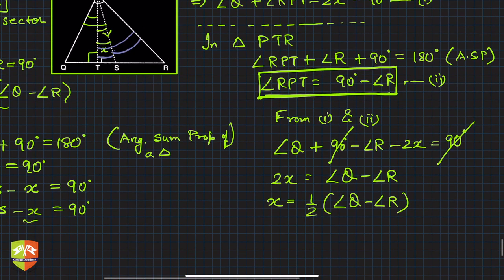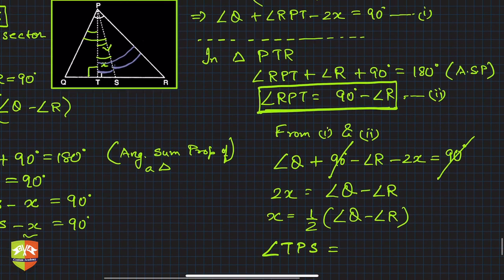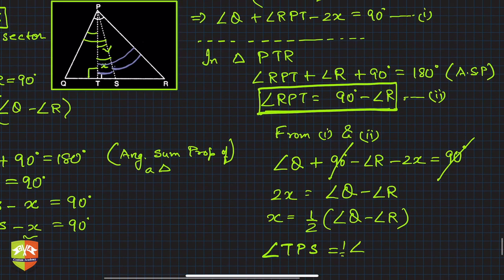And what was x, guys? ∠TPS. So ∠TPS—look at the diagram, you'll get it—∠TPS is equal to half (∠Q - ∠R), isn't it?